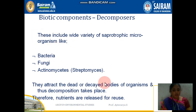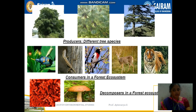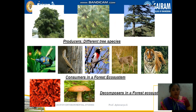The decomposers consume the nutrients available in dead organisms. Abiotic components include organic and inorganic substances, as well as dead organic debris and a few more substances found in the forest. Images of producers, consumers, and decomposers in the forest ecosystem are shown — different plants, consumers, and finally the decomposers.